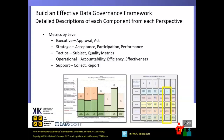The metrics by level: executives need to approve the metrics we're going to share, but more importantly, they need to act on the results. In the earlier version of the framework I didn't have the word 'act' in there — at some point, somebody needs to approve that change will take place and act on results brought by the council. At the strategic level, they're looking for acceptance, participation, and performance metrics. At the tactical level, it's mostly focused on specific subject areas. At the operational level, we can measure accountability, efficiency, and effectiveness. At the support level, we need somebody to help collect and report the appropriate metrics across the organization.